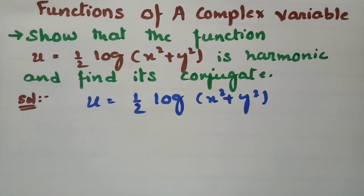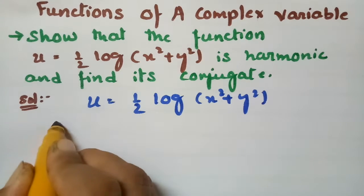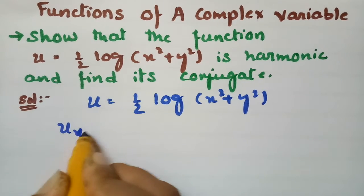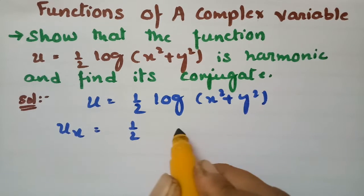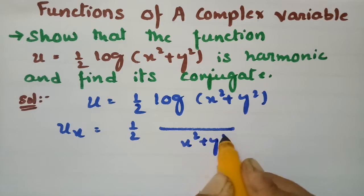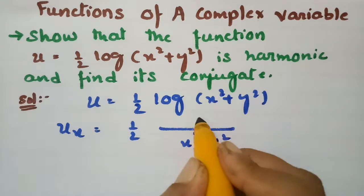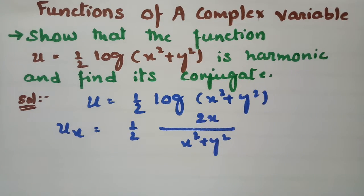The Laplace equation is: ∂²u/∂x² + ∂²u/∂y² = 0. Now I need to take the derivative with respect to x. The half is a constant, and the derivative of log(x²+y²) with respect to x is 1/(x²+y²) times 2x.